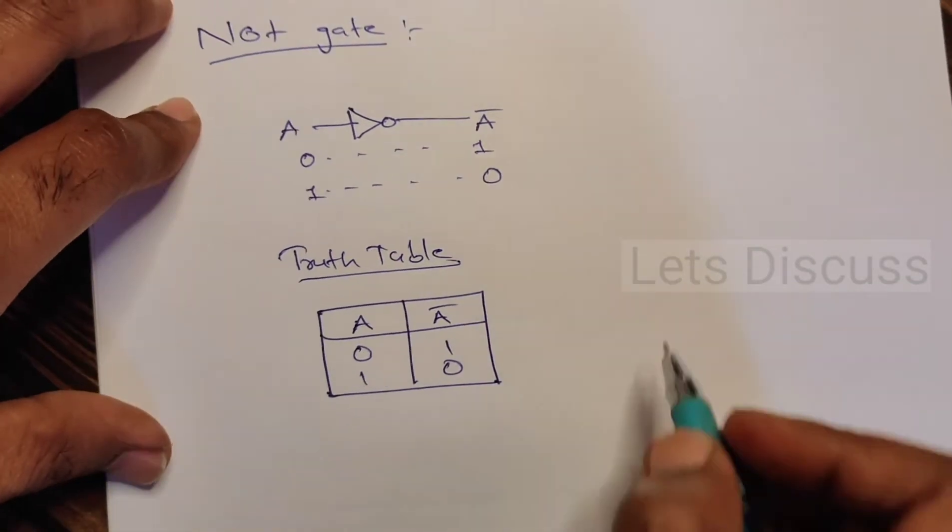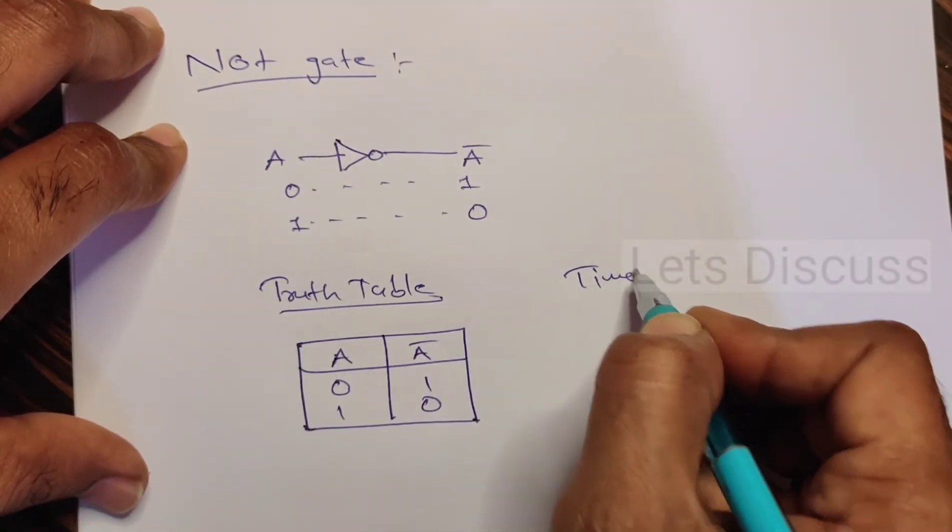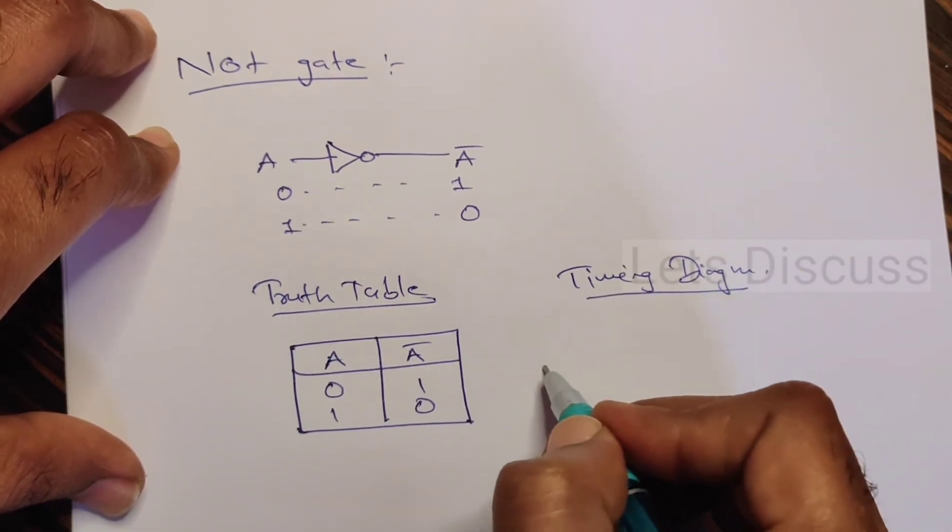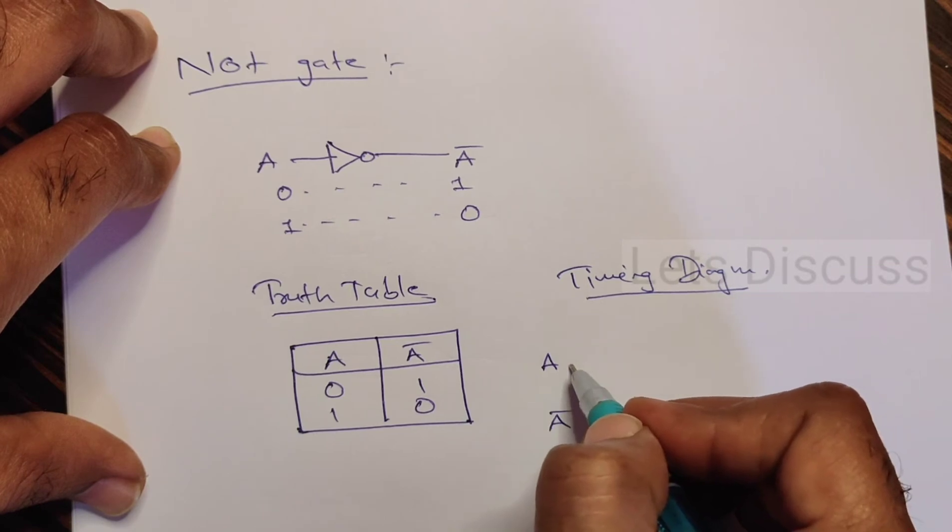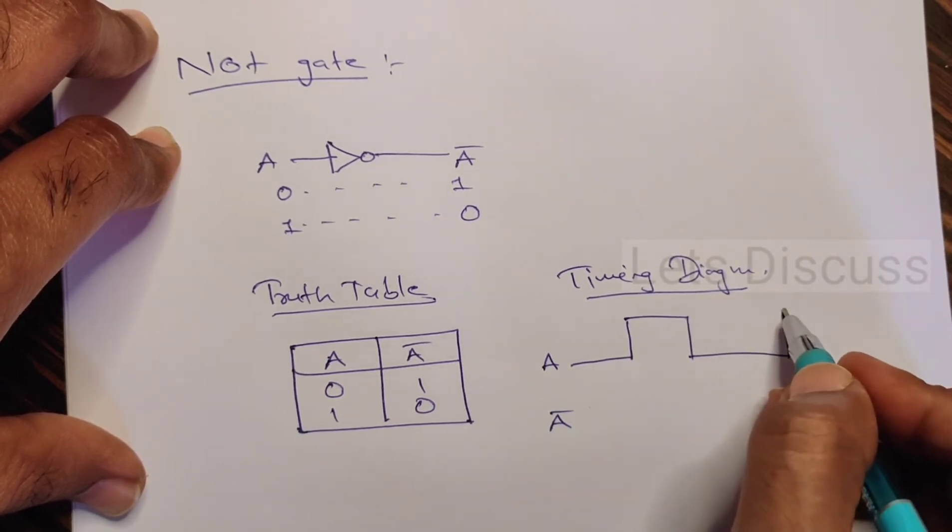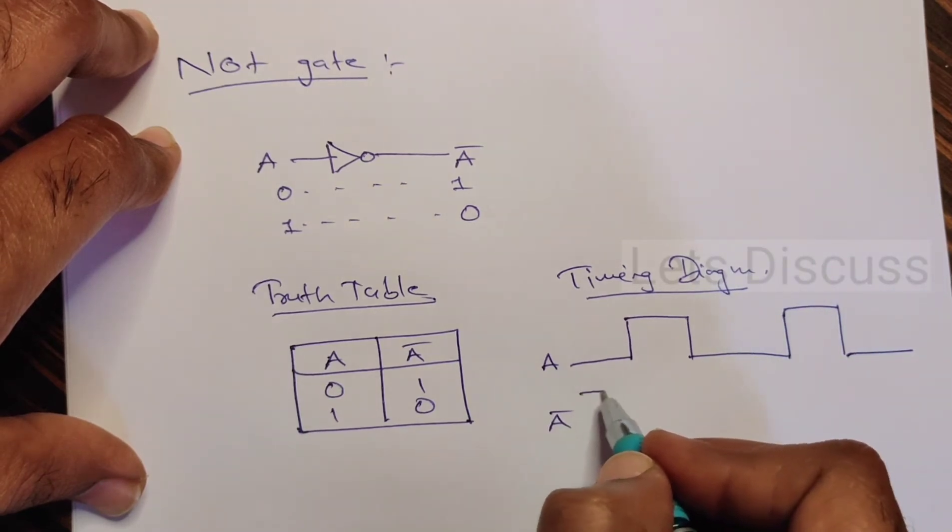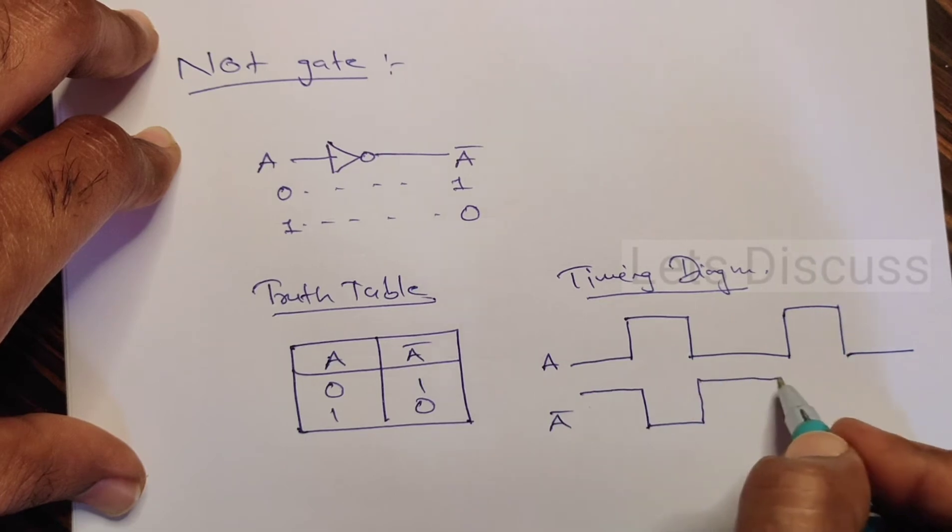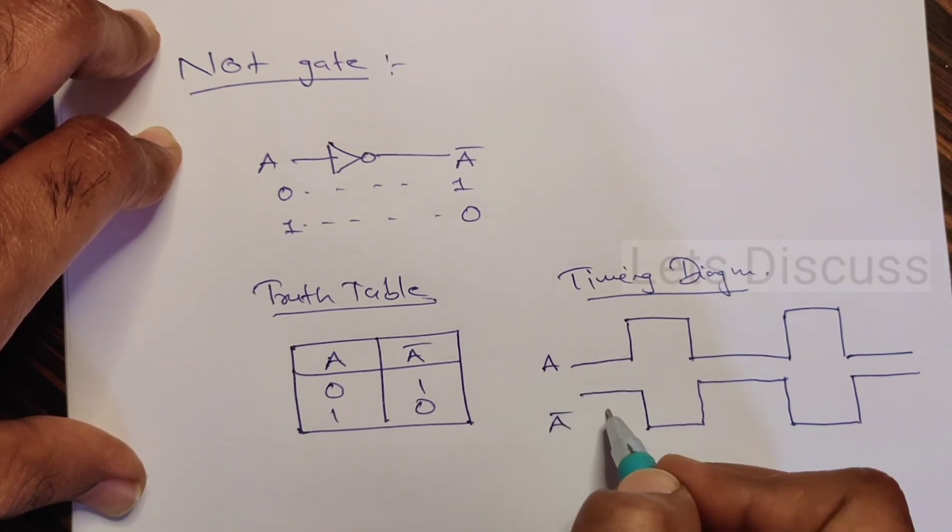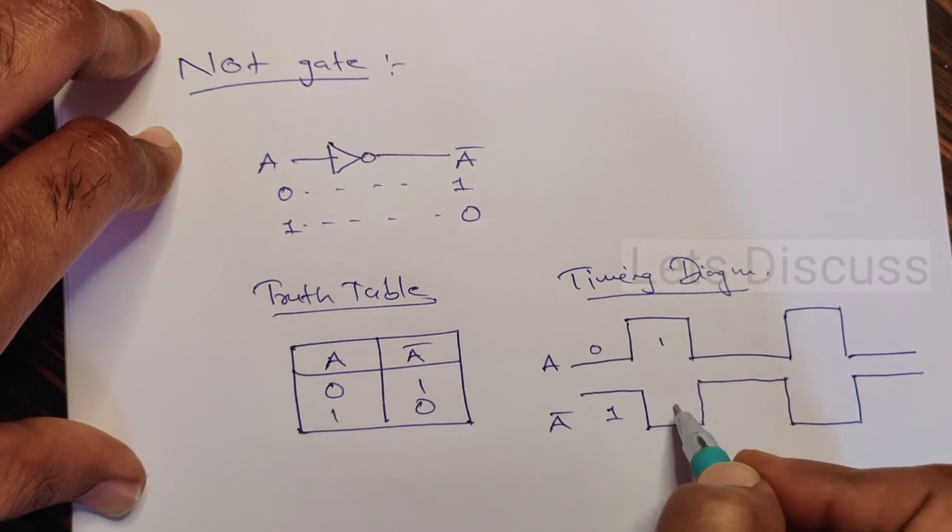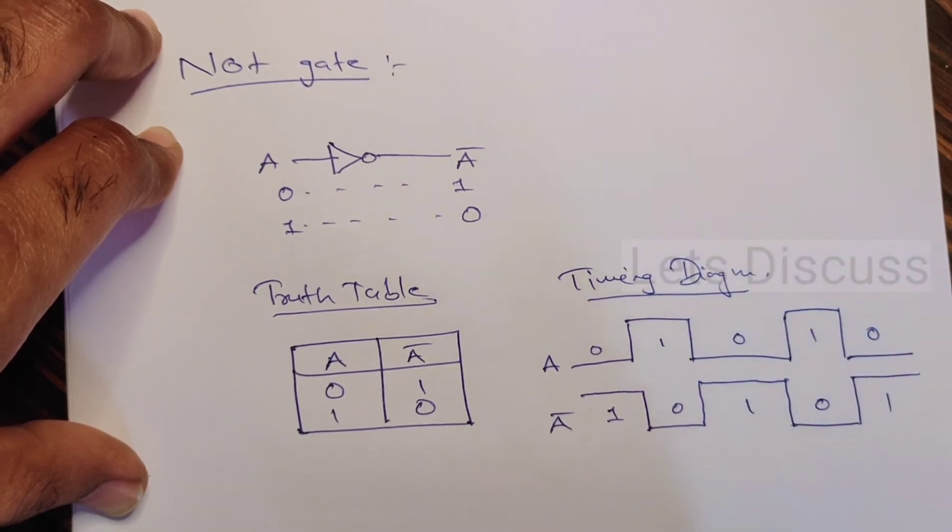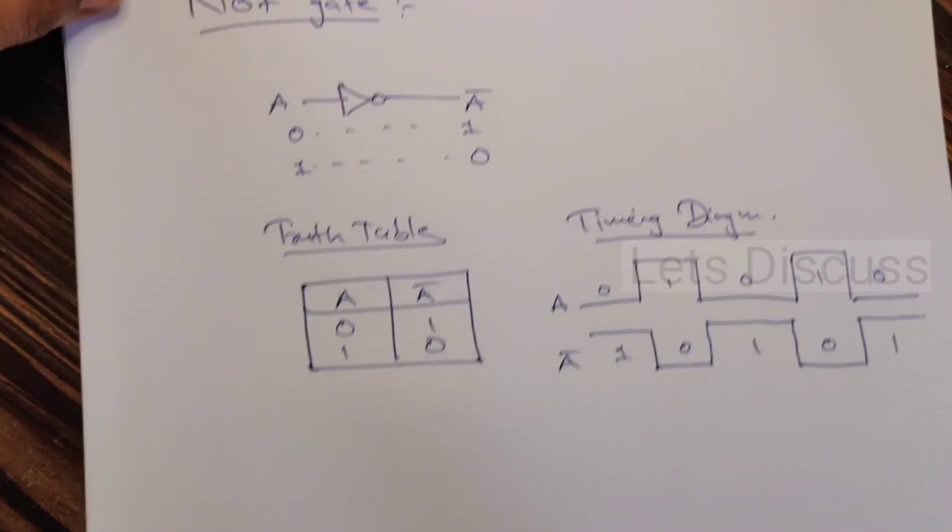And the timing diagram is very simple. A bar, when it is low to high and again low to high, when input is low, output is high, just inverse of the input. See, when it is low, this is high. When the input is high, the output is low. Low high, high low, low high. Okay, this is all about NOT gate.